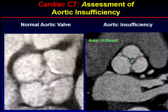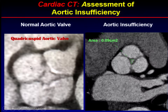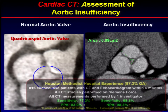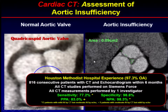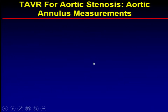We can also look at the types of valves that patients have. This is a quadricuspid aortic valve in diastole, and this patient also had severe aortic insufficiency. We recently looked at our own data in over 800 patients. Overall agreement was 97%, and the negative predictive value was extremely high — 98% — in terms of excluding significant aortic insufficiency with CT techniques.